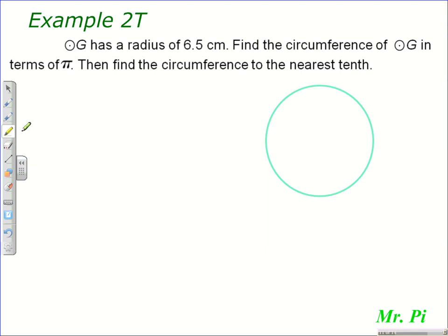This problem is going to have two answers. The first is going to be the circumference of the circle in terms of pi. Next will be the circumference of the circle to the nearest tenth.